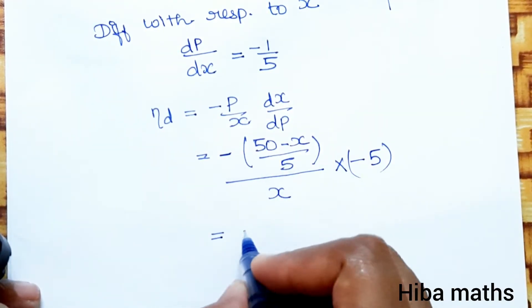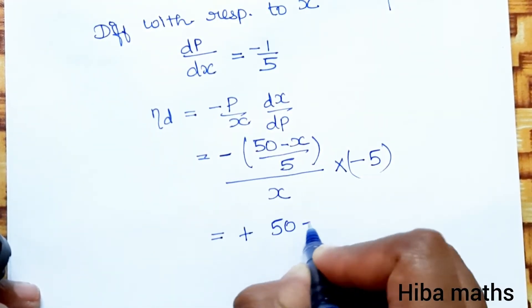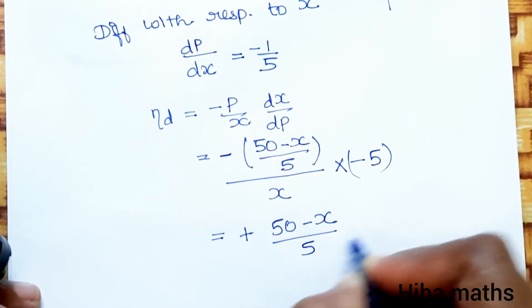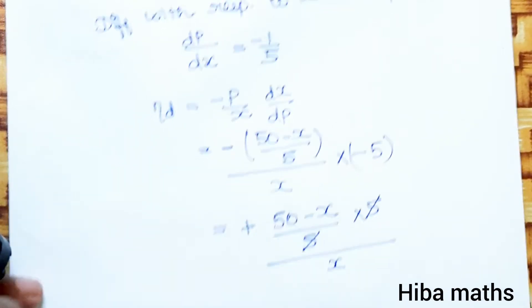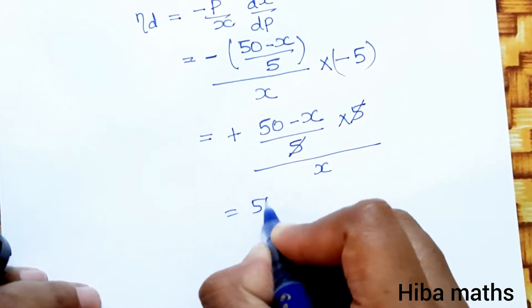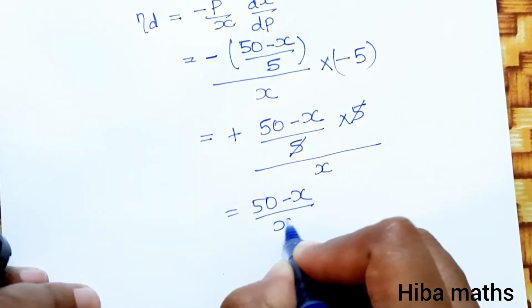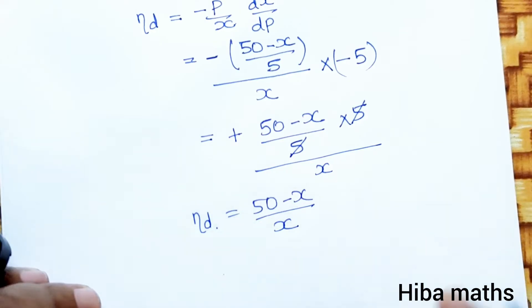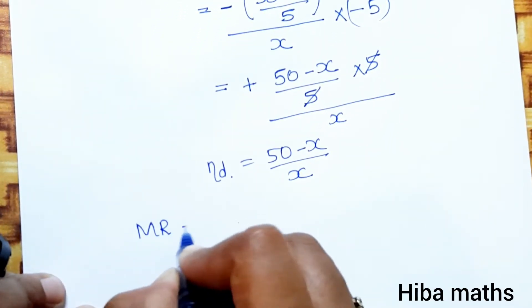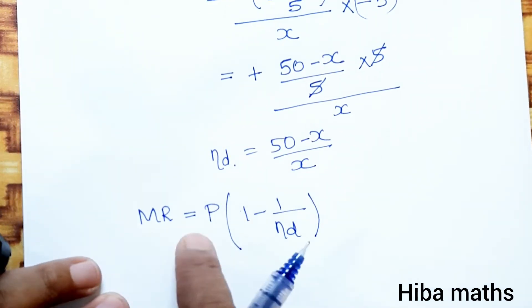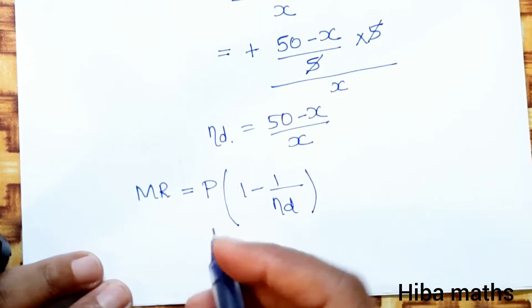Minus into minus gives plus. So we get 50 minus x by 5 times 5, which simplifies. 5 by 5 equals 1, so η_d equals 50 minus x by x. Now we apply the marginal revenue formula.